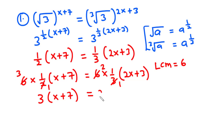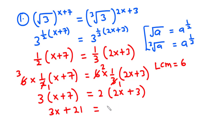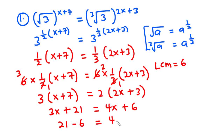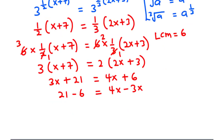Expanding: 3 times x is 3x, 3 times 7 is 21, and 2 times 2x is 4x, and 2 times 3 is 6. Now let's transpose: move 3x to the right-hand side and 6 to the left-hand side, giving us 21 minus 6 equals 4x minus 3x. So 21 minus 6 is 15, and 4x minus 3x is x. Therefore x is equal to 15.